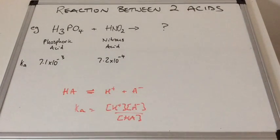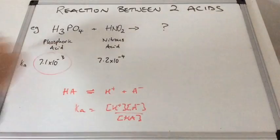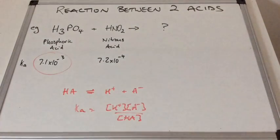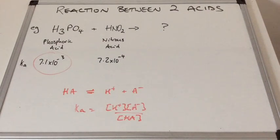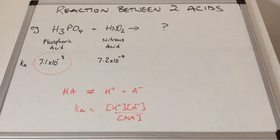So out of the two Ka values on the board, which is the largest? It's this one here. So phosphoric acid is a stronger acid than nitrous acid, which means the phosphoric acid can donate a proton to the nitrous acid.